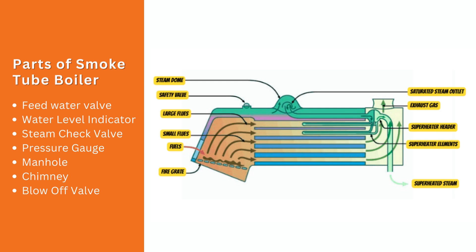The steam check valve prevents steam from flowing backward. The pressure gauge monitors water and steam pressure. The manhole provides access for maintenance and cleaning. The chimney releases burnt gases from the boiler.